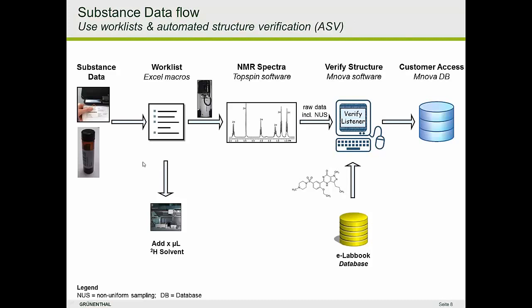Let's look at the substance data workflow. Compounds from external synthesized providers come in a barcoded vial — people just scan in the barcode and get all the information about substance names. For internal synthesis, people print out the substance name from their electronic lab book and scan it in — whether it's a final synthesis product, an intermediate, or an educt. We also allow people to type in the substance name if they don't have access to their electronic lab book. We collect substance information across a day into a worklist and use Excel macros to trigger the liquid handling for organic solvents.